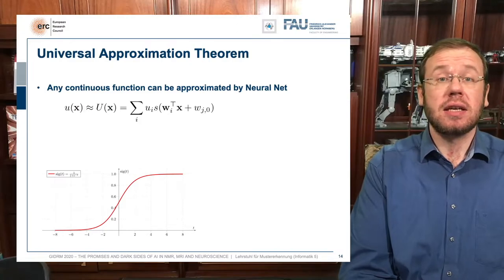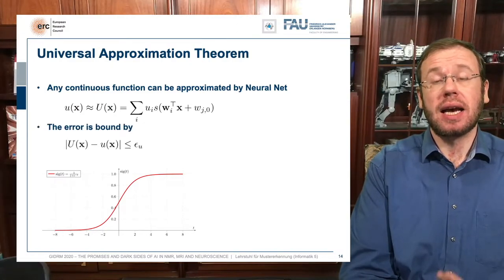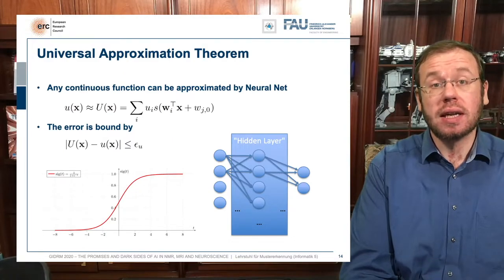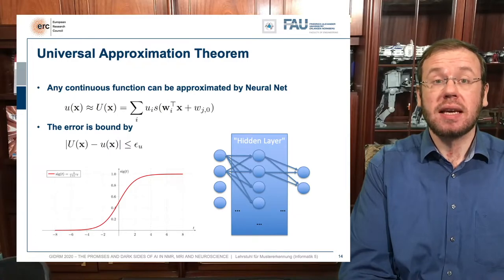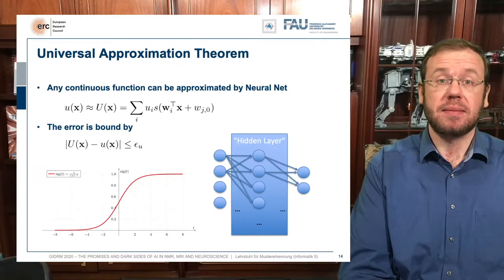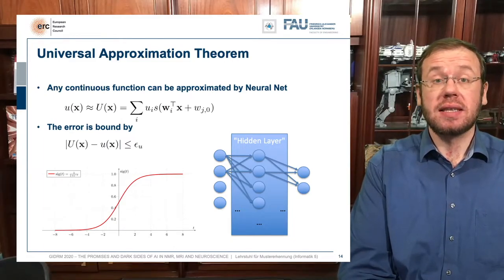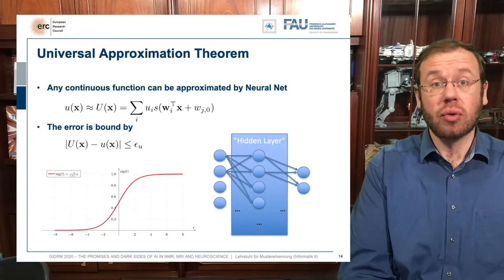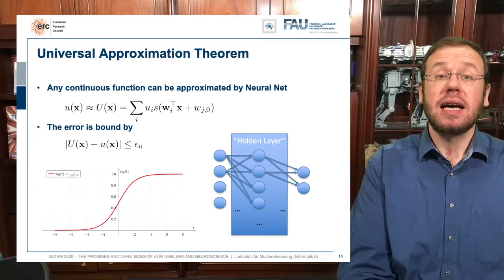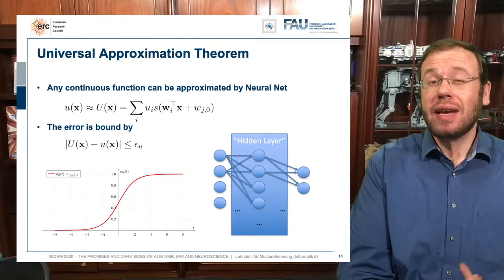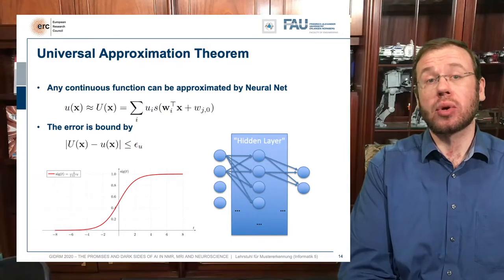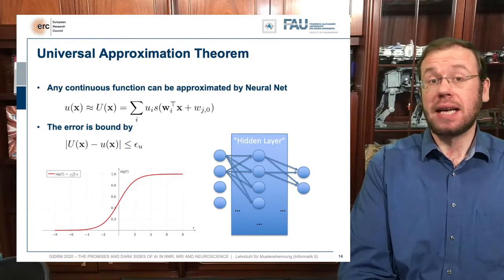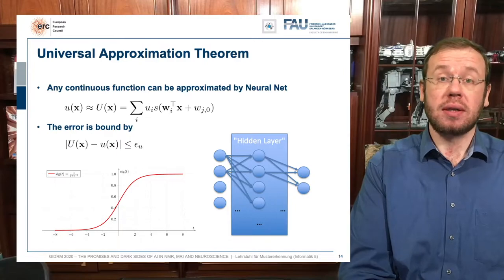For this fully connected layer, we can show there is an upper bound for the approximation given as some epsilon_u — the distance between U(x) and u(x). If we increase the number of neurons in that one hidden layer network, the error shrinks. With close to infinitely many neurons, epsilon approaches zero. So the more neurons you have, the more capacity your network has, and the better you can learn the underlying function. This applies on a compact set and for a given training dataset.